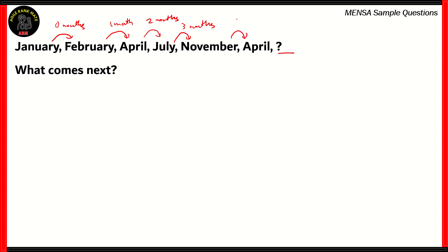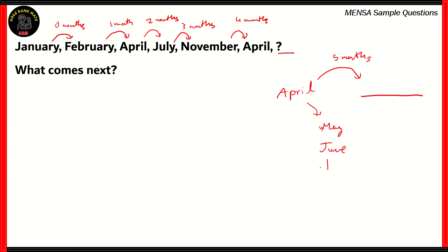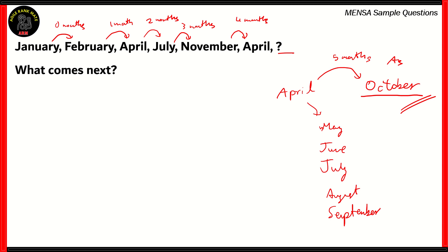Finally, between November and April, there are four months: December, January, February, and March. So the next month needs to be the one with five months between it and April. After April comes May, June, July, August, September — those are the five months. So the right answer is the month after September, which according to the calendar is October. October turns out to be the right answer.